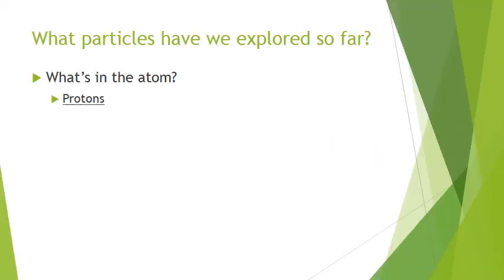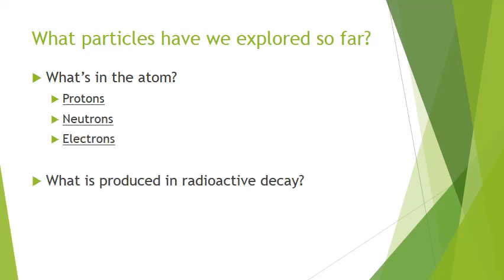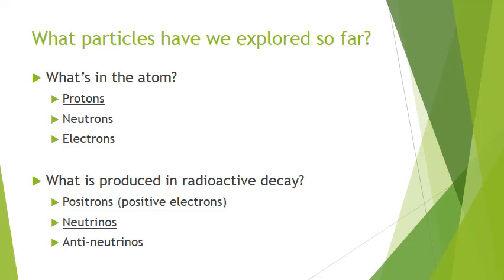Some particles that we've looked at so far: protons, neutrons, electrons. We also looked at, in radioactive decay, positrons, which are positive electrons — the anti-particle of an electron. Neutrinos, as well as anti-neutrinos. We've looked at all of those.